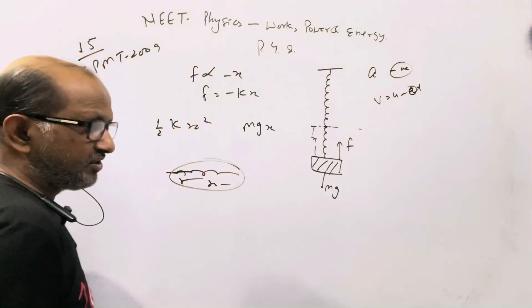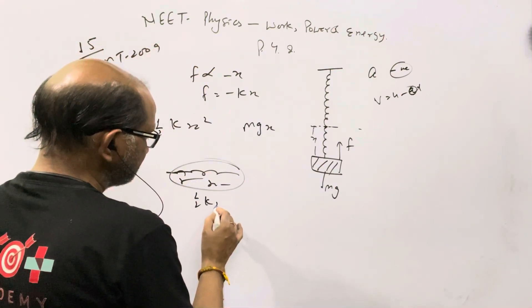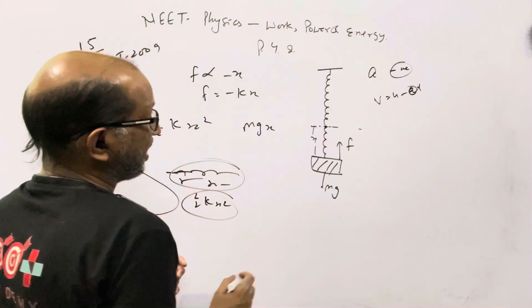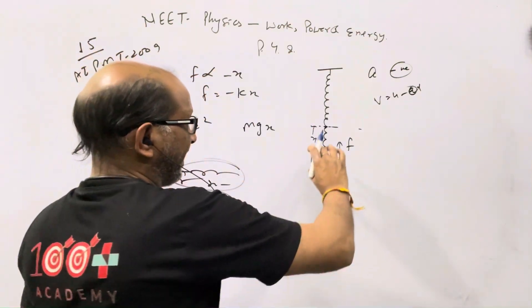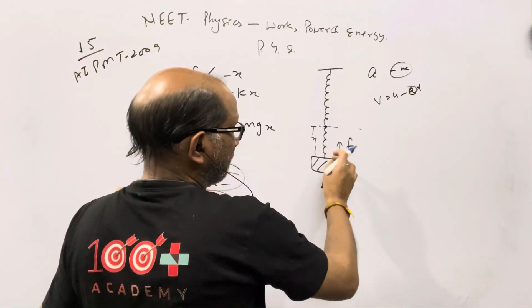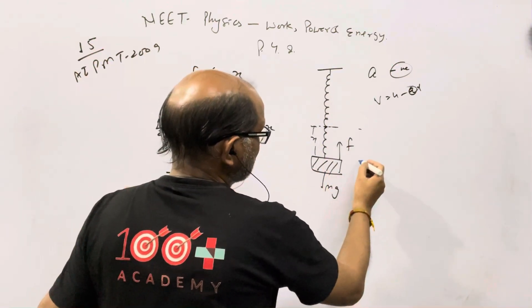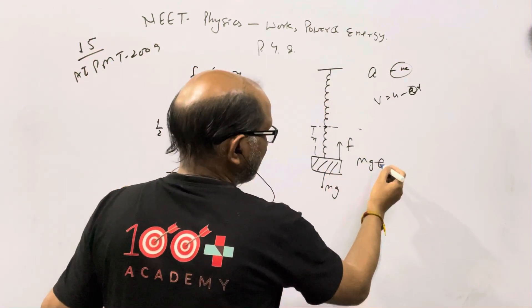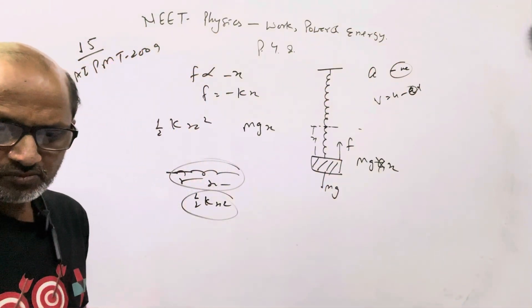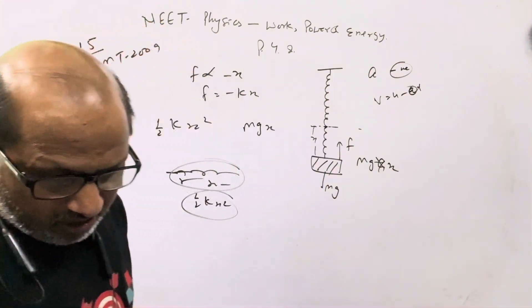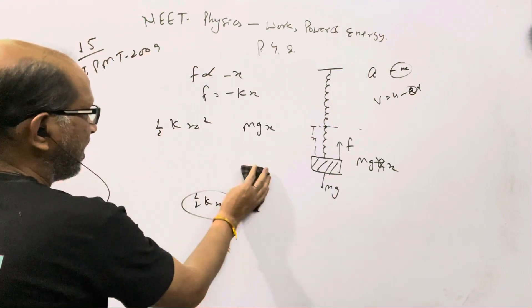This energy created is called half kx square. If you pull the spring and extend it by height x along force mg, its potential energy becomes mgh, or mgx. So the spring's energy, by conservation of energy half kx square, will equal mgx.